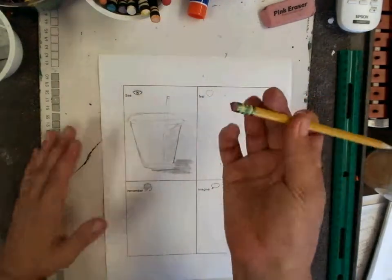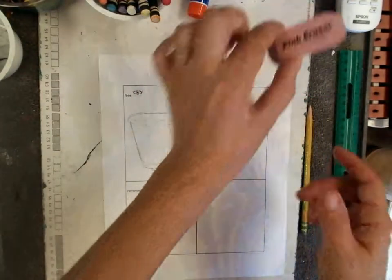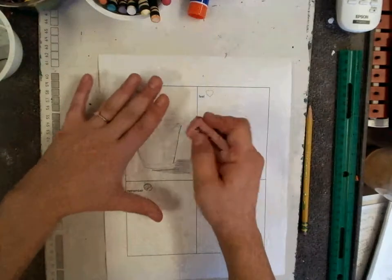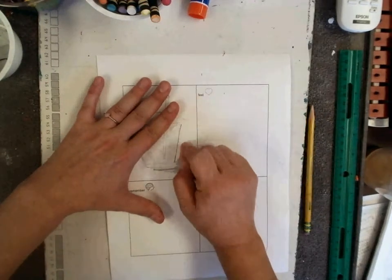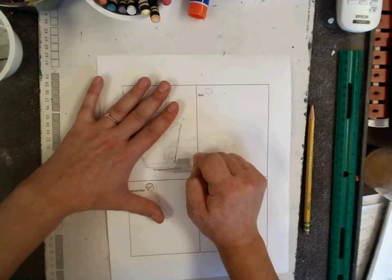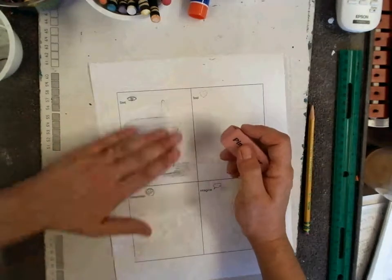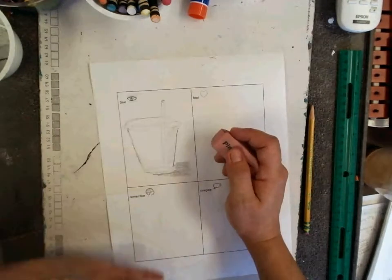You can use your eraser or the eraser in your pencil box. When you erase, we move the eraser around, and we wipe off the crumbs.